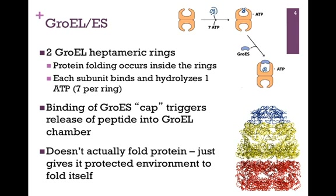Lastly, we have the complex GroEL-GroES, which we have considered in an earlier chapter. GroEL is a complex of two heptameric rings — seven-membered rings — and protein folding occurs inside each of these two rings. Each of the seven subunits in each of the rings binds and hydrolyzes one ATP, so seven ATP molecules per ring.